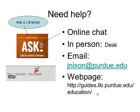When you need help, there are several ways you can get it. You can email me or stop by my office. We also have an online chat service where you can chat with a librarian. Another method is to stop at the front desk of the library and talk to a staff member in person. You can also email me at jnixon at purdue.edu, or use one of our library guides. I'm going to show you how to use the Education Library Guide today.